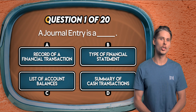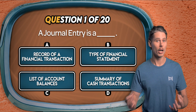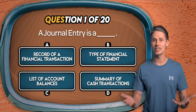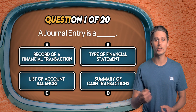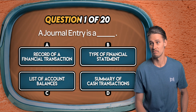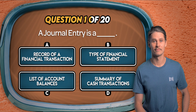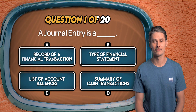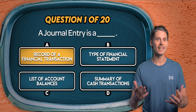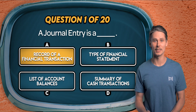Question 1. A journal entry is: a record of a financial transaction, a type of financial statement, a list of account balances, or a summary of cash transactions? The answer is A. A journal entry is a record of a transaction in an accounting system.